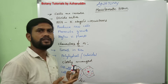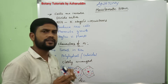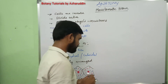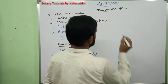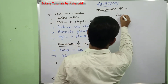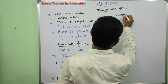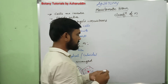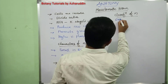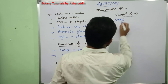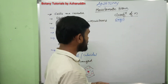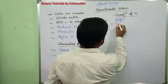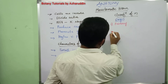Meristematic tissue is classified into various types based on position, based on origin, based on the plane of division, and based on function. First, classification based on origin: meristematic tissues are divided into mainly two types — primary meristems and secondary meristems.